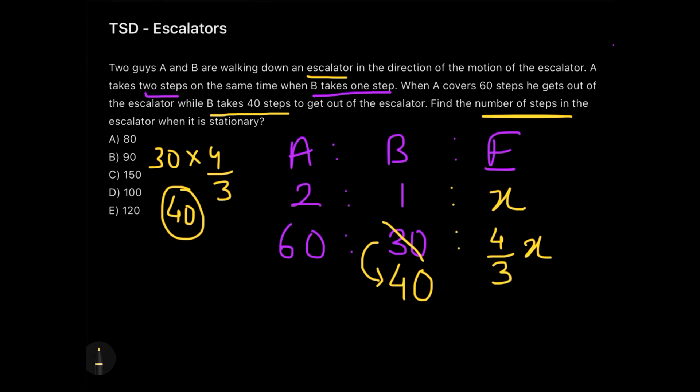Now what kind of an equation are we going to form? I know that the visible number of steps in the case of A will be—because A is traveling in the direction of the motion of escalator—so the equation with me will be 60 plus x. If you people agree, yes, this is what we learned.